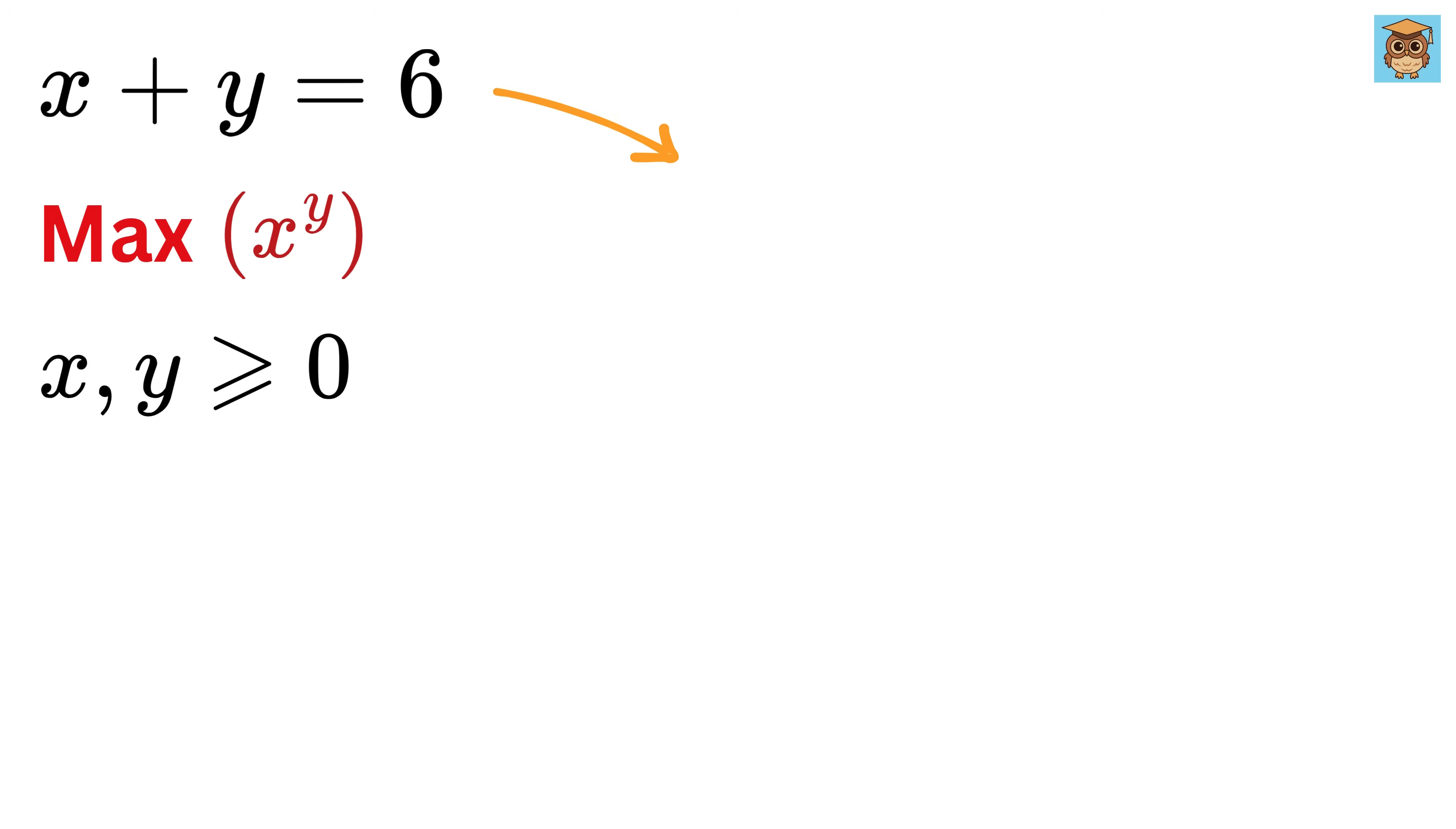Let us substitute y as 6 minus x here to get x to the power y as x to the power 6 minus x, and let us call this as a function a of x.